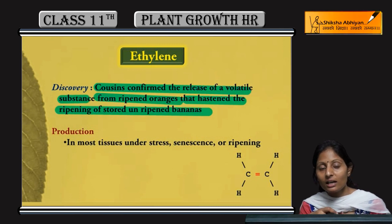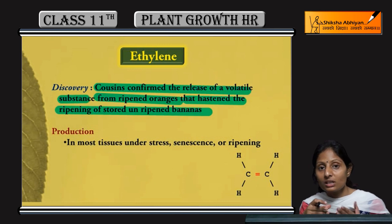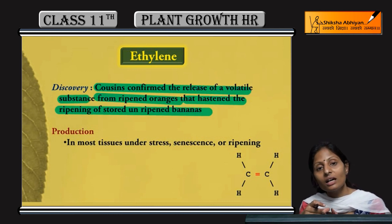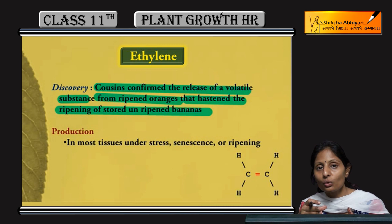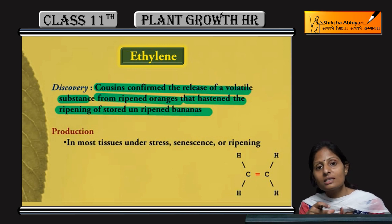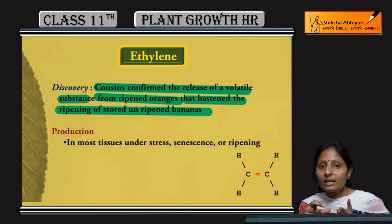What was observed was that oranges were secreting some volatile substance which increased the process of banana ripening. The unripened bananas stored nearby were also ripened. So that volatile chemical substance is a plant growth regulator — that is ethylene.